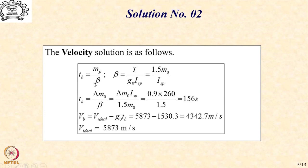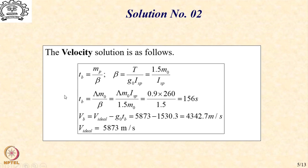What is Tb? It is MP by beta. MP is lambda into M0 by definition. Substituting, Tb equals lambda·M0 divided by beta, which gives an expression for burnout time in terms of lambda, ISP, and the ratio 1.5. This directly tells us that it will take 156 seconds to complete the burning.